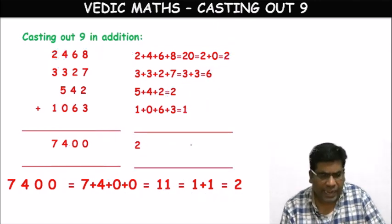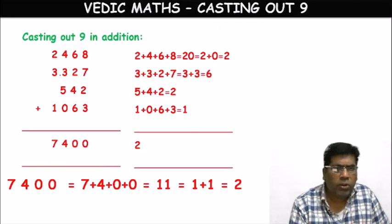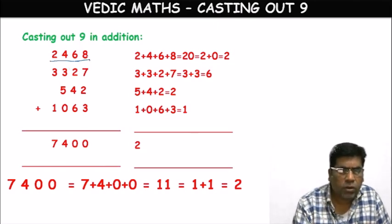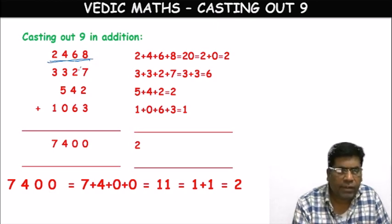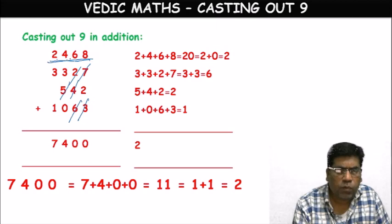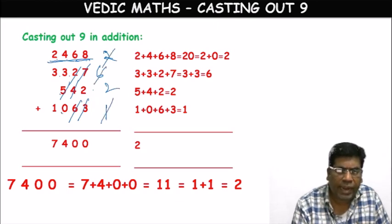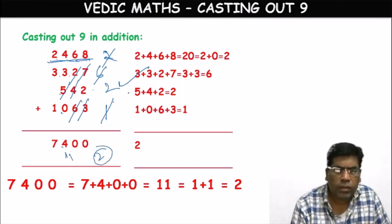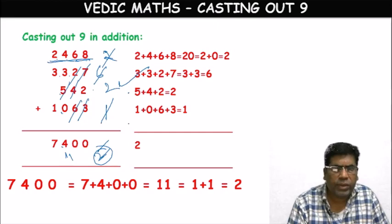To recap: for the first number, no nines. For the second, third, and fourth numbers, cast out the nines. 2+4+6+8=20, then 2+0=2. 3+3=6 (after casting out 2+7=9). Third gives 2, fourth gives 1. Then 2+6+2+1: since 2+6+1=9, cast out, leaving 2. For 7400: 7+4=11, 1+1=2. Correct.